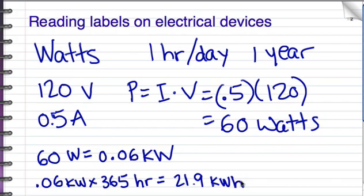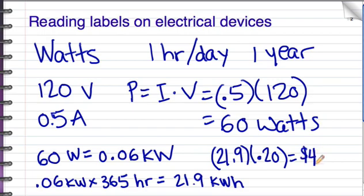And if the electric company charges you 20 cents per kilowatt hour, then the cost will be 21.9 kilowatt hours times 20 cents, or $4.38.